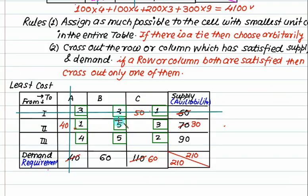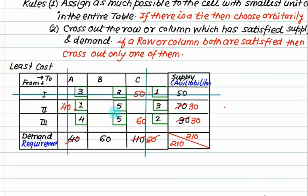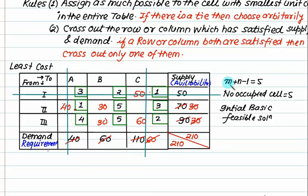From the unoccupied cells, the least cost is 2. We want 60 — 90 is available. Can we fulfill the requirement? Allocate 60. Then 30 is left, so cancel out column 3 as it is exhausted. What is needed now? 30 — give 30, it will cancel out. Strike off both: 30 plus 30 equals 60. We have m equals 3, n equals 3, minus 1 equals 5, which matches the number of occupied cells.